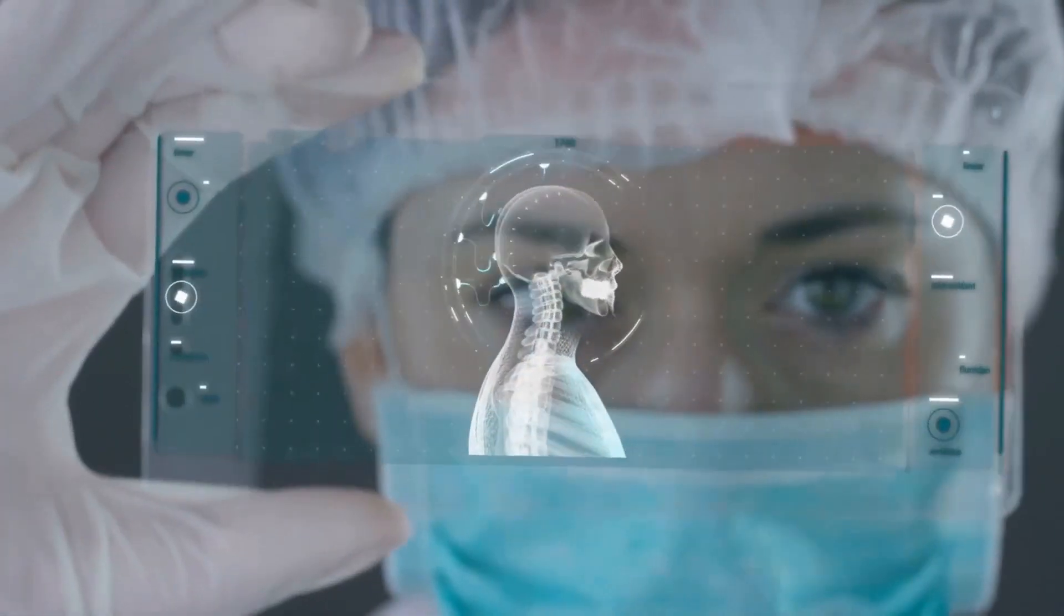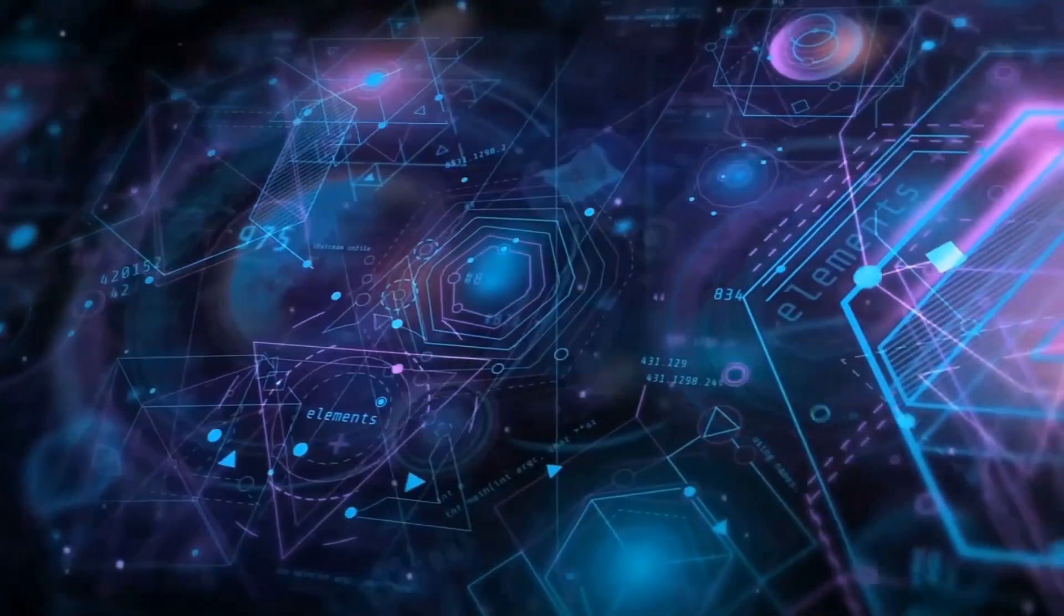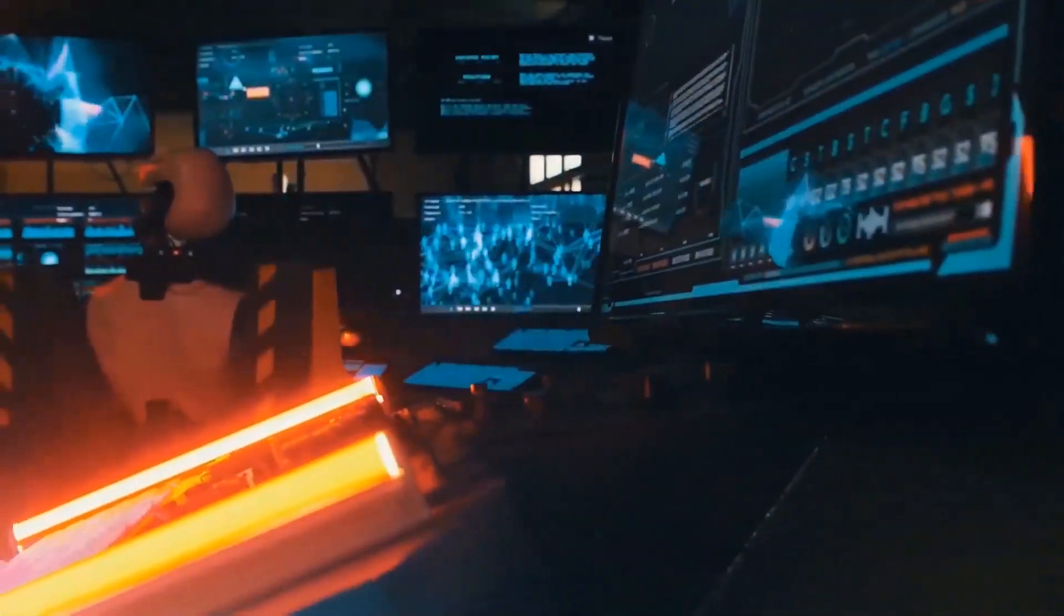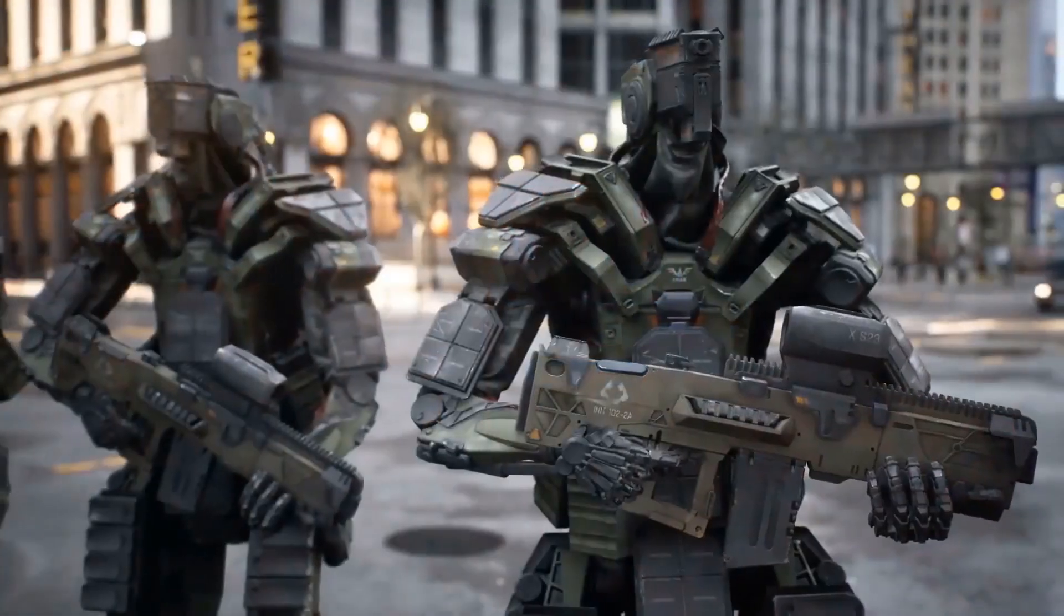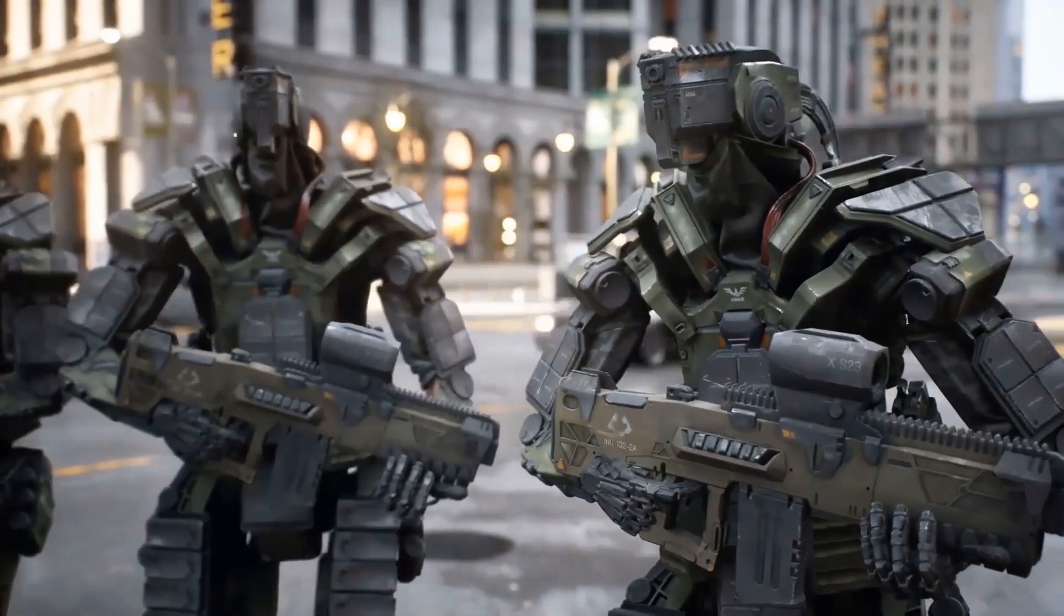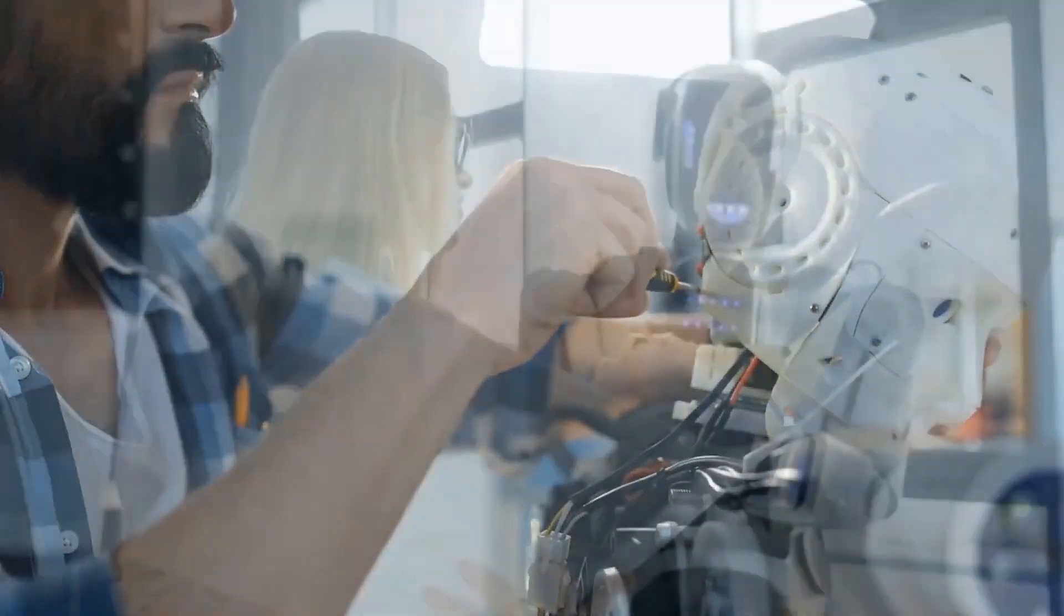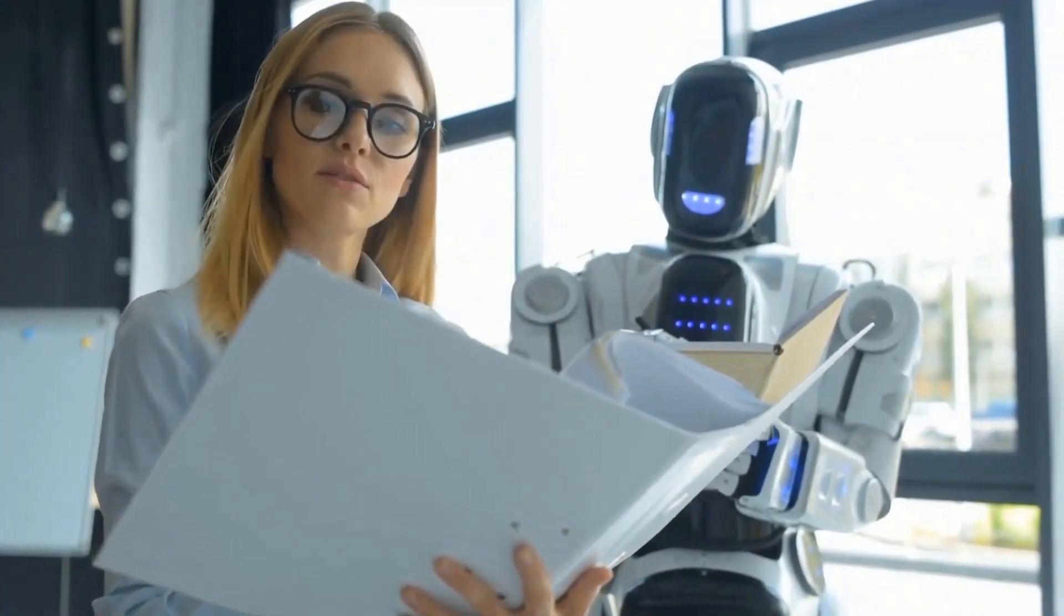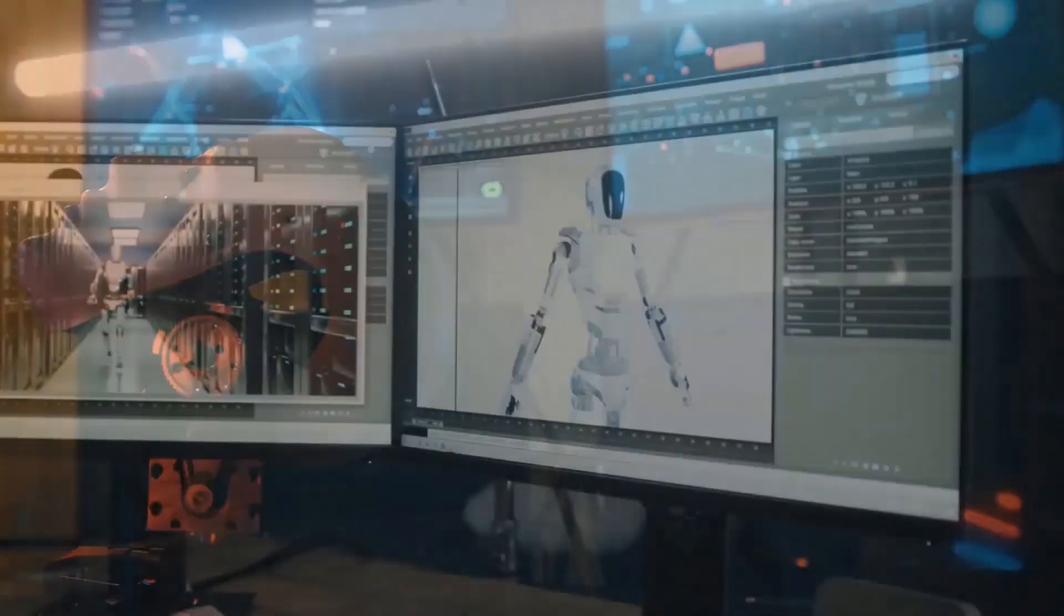However, humans bring ethical considerations, emotions, and moral values into decision-making. We understand long-term consequences, responsibility, and the gray areas of ethical dilemmas, something AI cannot truly grasp. For example, in situations where ethical ambiguity exists, such as deciding medical treatments or legal judgments, human judgment and ethical reasoning are irreplaceable. AI lacks moral consciousness and cannot weigh subjective aspects of complex decisions.